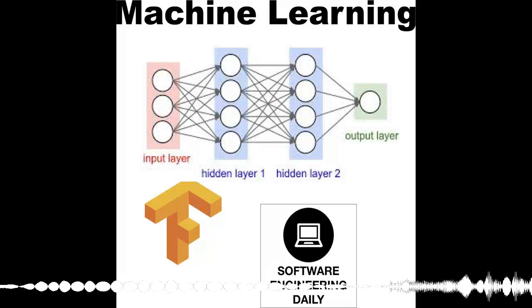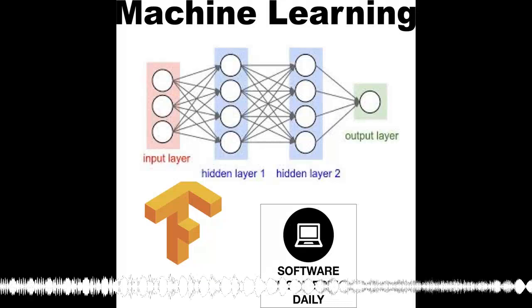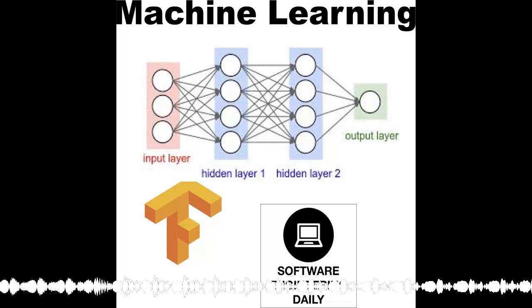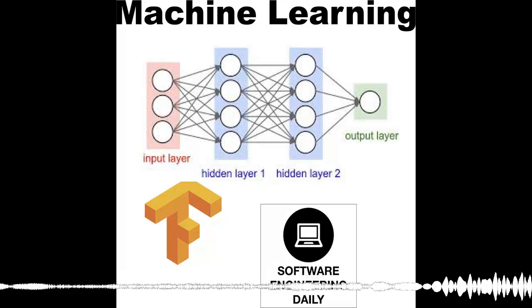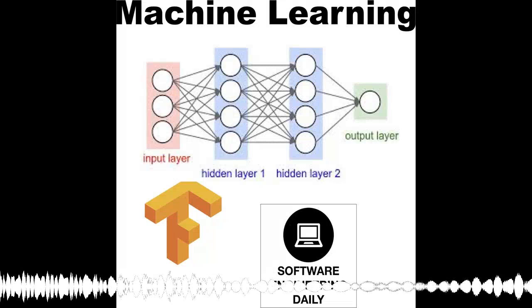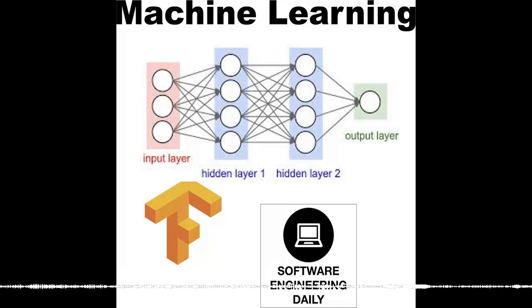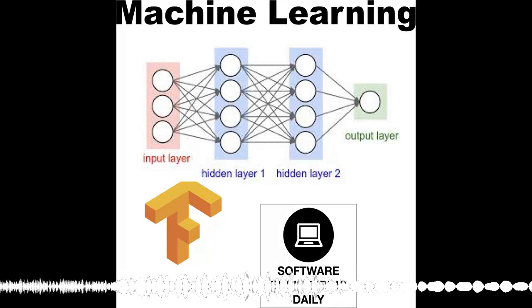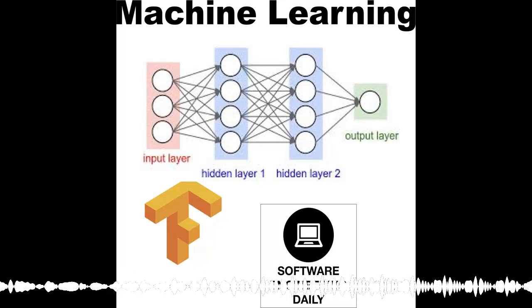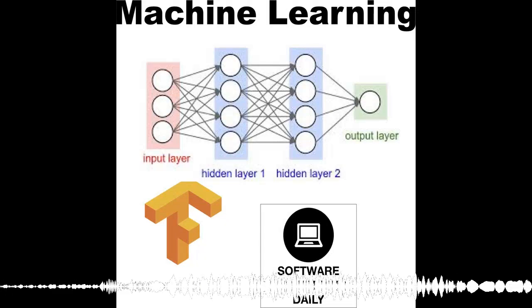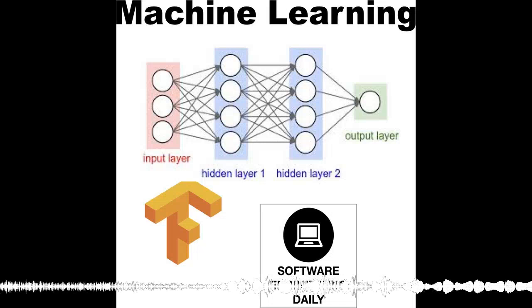Every company that deals with payments deals with fraud. The question is not whether fraud will occur on your system, but rather how much of it you can detect and prevent. Because fraud detection is such a difficult optimization problem, it's a good fit for machine learning techniques. Today's guest, Michael Manipot, works on machine learning fraud detection at Stripe.